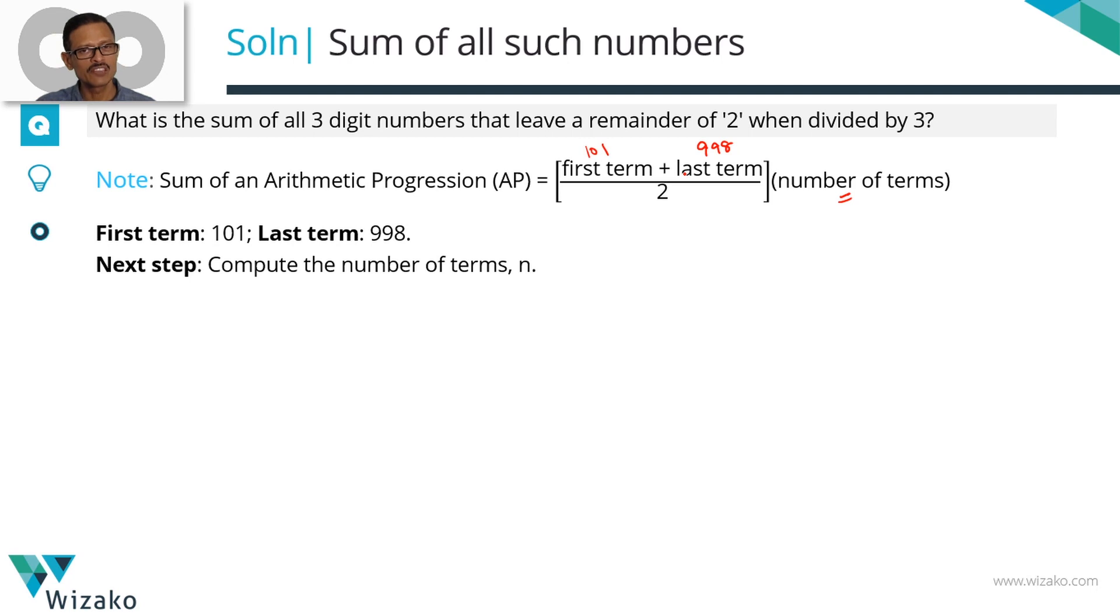How do we compute the number of terms? We'll use the formula to find the nth term of an arithmetic progression. The nth term an equals the first term a1 plus n minus 1 times the common difference. The last term is 998, the first term is 101, we're computing n, and the common difference is 3.